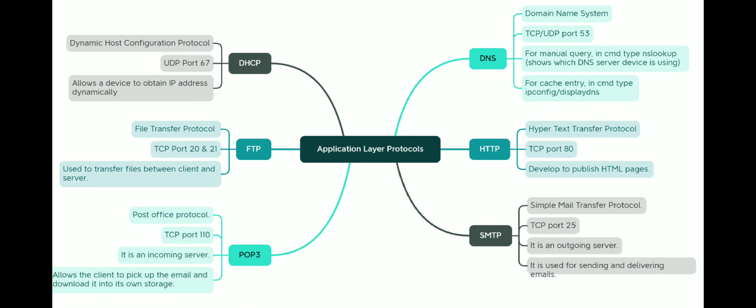There are some application layer protocols which we use in our practical experiences. The first is DHCP, which stands for Dynamic Host Configuration Protocol. It uses UDP port 67. It allows the device to obtain the IP address dynamically.